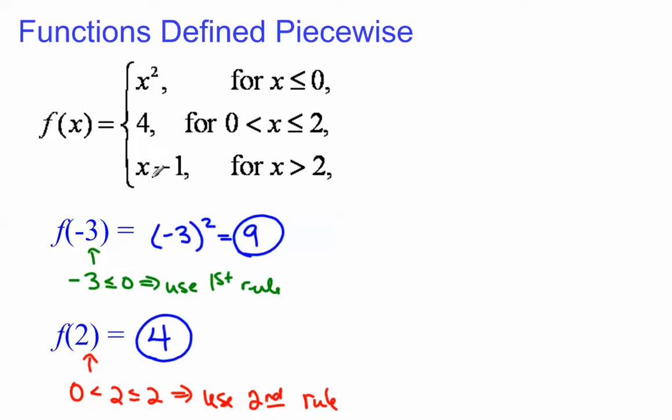Here, we're just looking at some basic algebraic equations. First of all, f of x could be x squared if x is less than or equal to 0. It is going to equal 4, just straight up 4, if x is between 0 and 2, including 2. And if x is greater than 2, strictly greater than 2, then we would use this third rule of x minus 1.